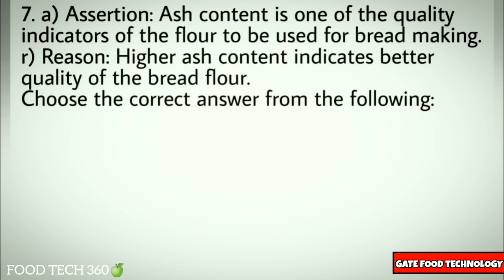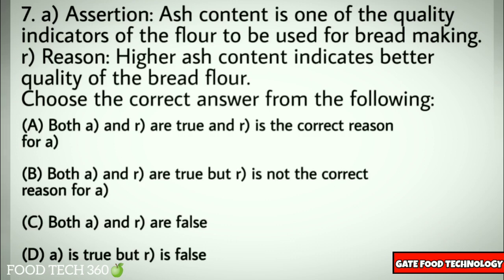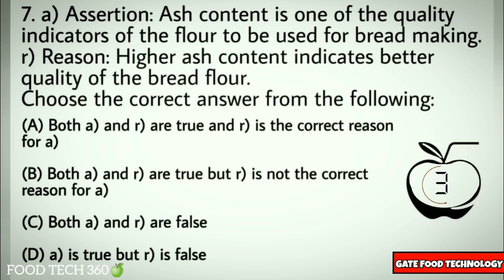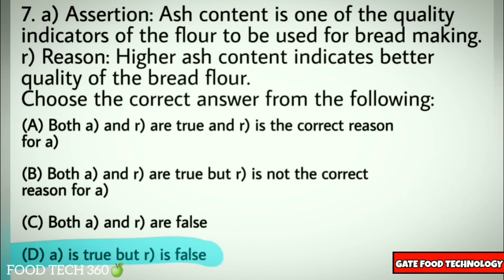Question number seven — Assertion: Ash content is one of the quality indicators of the flour to be used for bread making. Reason: Higher ash content indicates better quality of the bread flour. Options: A) Both A and R are true and R is the correct reason for A, B) Both A and R are true but R is not the correct reason for A, C) Both A and R are false, D) A is true but R is false. Correct answer: D) A is true but R is false.